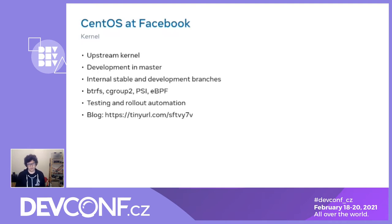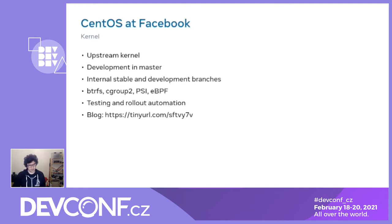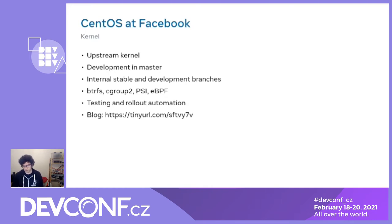Some examples of features we've worked on are: the Btrfs filesystem; resource control features leveraging cgroup2 — and Btrfs is what effectively makes reliable IO control possible within resource control; PSI (Pressure Stall Information), a kernel feature that effectively lets you predict whether a process is likely to be OOM-killed in the near term so you can act before that happens; and finally BPF and the BPF toolset. We have tooling to roll out kernels and test them safely.